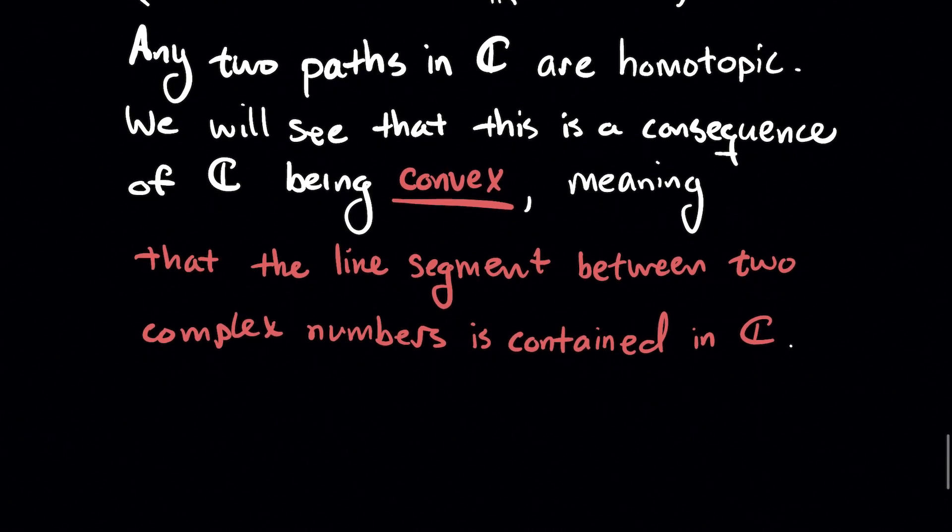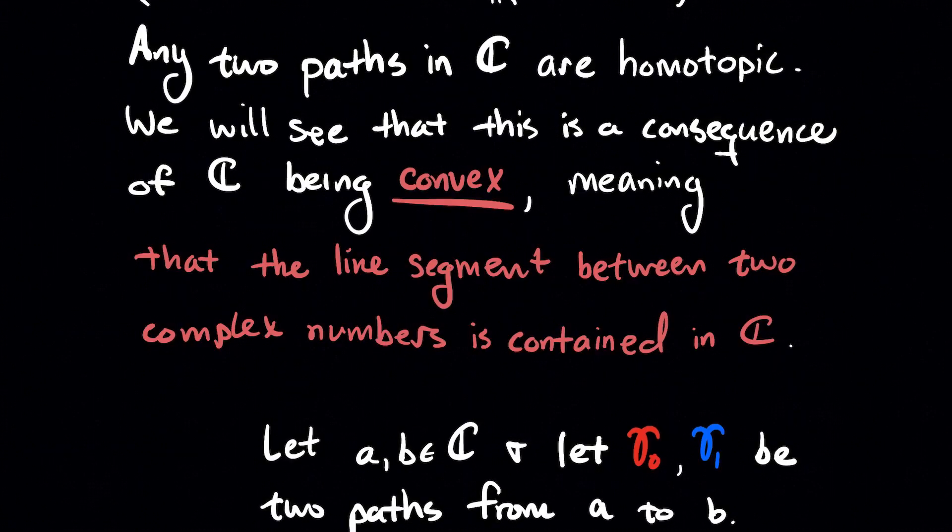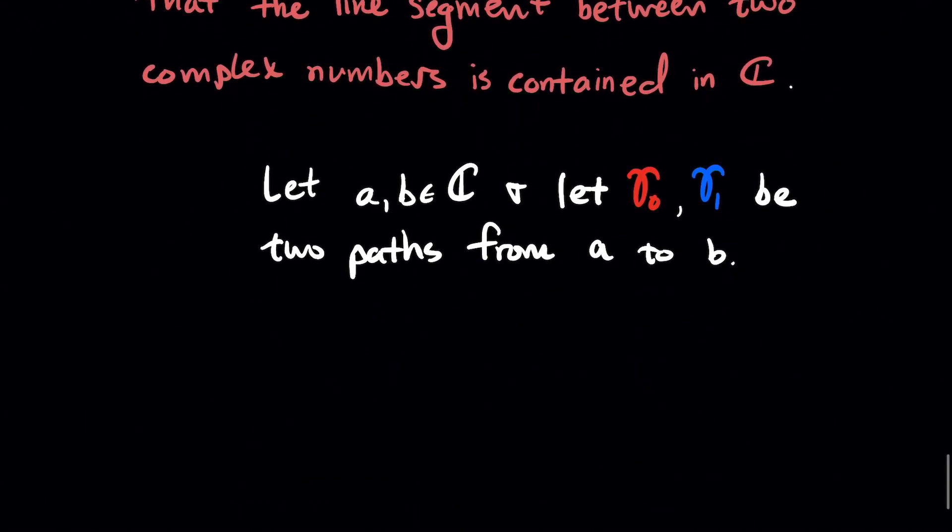And we're going to see that this is a consequence of the complex plane being convex. And that means that the line segment between any two complex numbers, that whole line segment is contained in our set, which is the complex plane. So if you can draw a line segment between two points and that line segment's in your space, then you're convex.